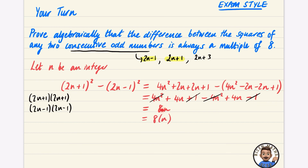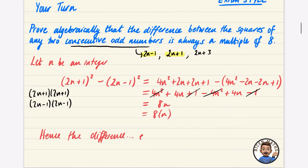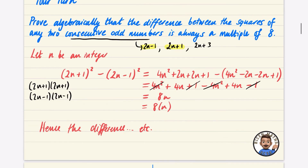The result is 8n, which can be written as 8 times n. Since n is an integer, this is a multiple of 8. Hence the difference between the squares of any two consecutive odd numbers is always a multiple of 8.